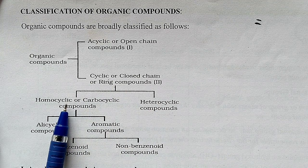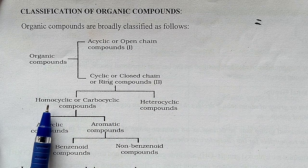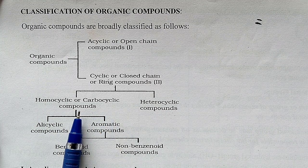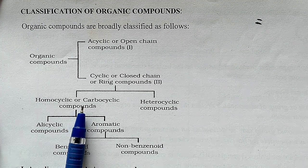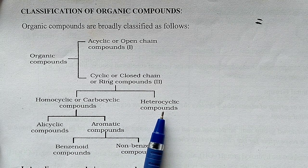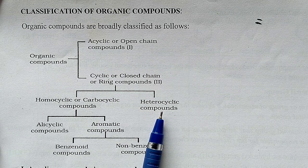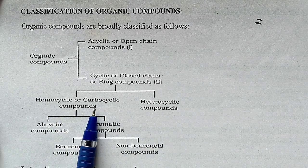Under cyclic compounds, you can have two classifications. First is homocyclic or carbocyclic compounds — homocyclic means all members of the ring are the same. These are also called carbocyclic because organic compounds are made up of carbon and hydrogen, and here carbon forms the ring. Second is heterocyclic compounds, where along with carbon in the ring, we can also have hetero atoms or elements.